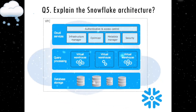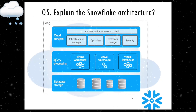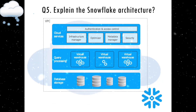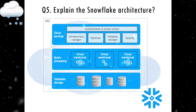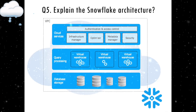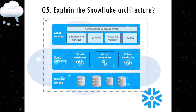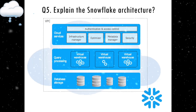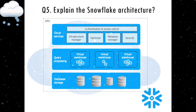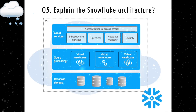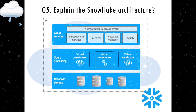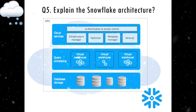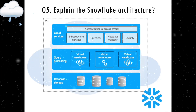The Snowflake architecture has three parts: database storage, query processing, and cloud services. Database storage is where data is stored in Snowflake's internal optimized columnar format. Query processing is handled by virtual warehouses — compute instances that process queries. The cloud services layer is the topmost layer that coordinates all activities across Snowflake, providing authentication, security, access management, metadata management, infrastructure management, and query parsing.